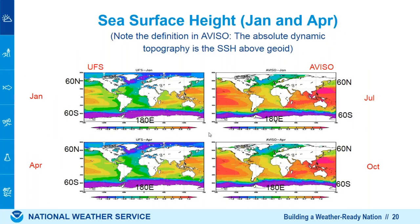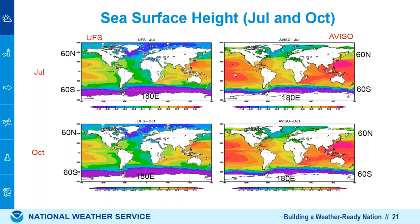Now, sea surface height. There's a slightly different definition when comparing altimetry data and UFS/MOM6, so again we compare qualitatively. The altimetry shows two peak values around 20 degrees north or south in the Pacific and Atlantic Oceans. A similar structure appears in MOM6, with peaks around 25 degrees north or south. The July and October case shows the same two peaks in Pacific and Atlantic, consistent with MOM6. The magnitude is slightly different because of different definitions.